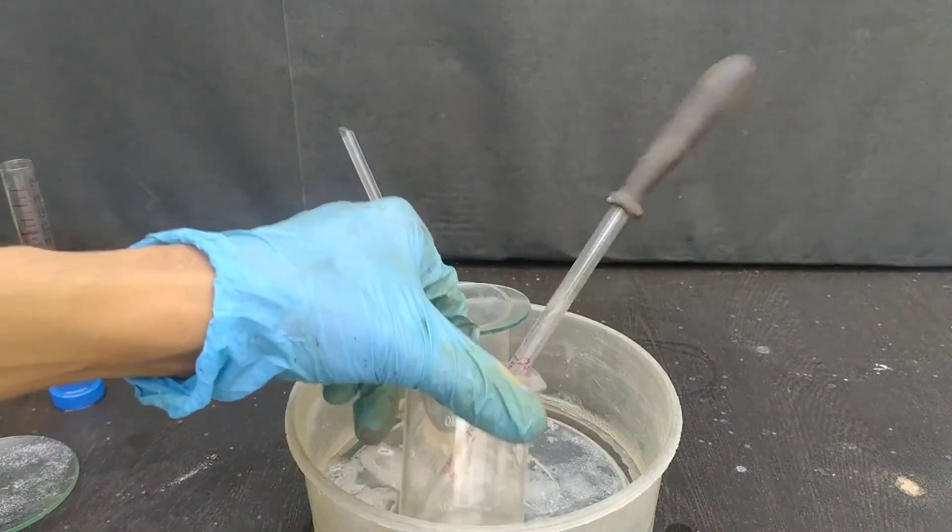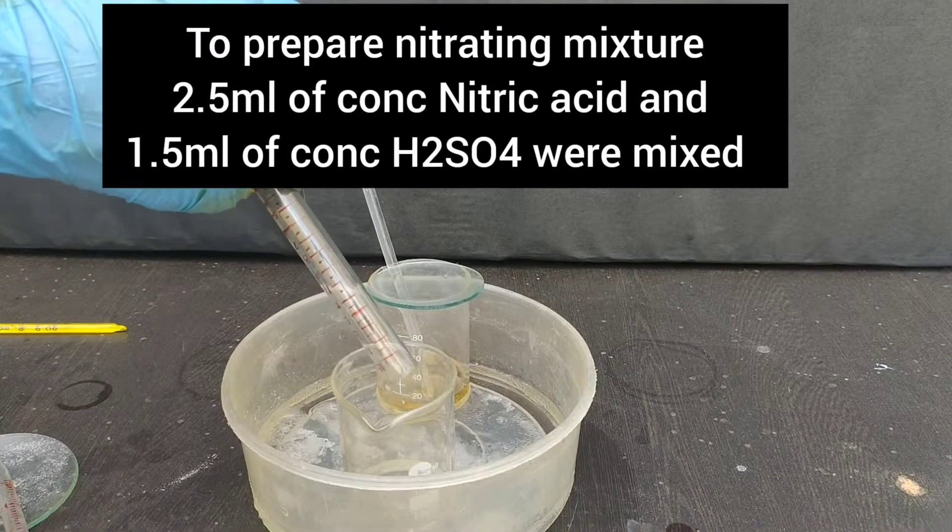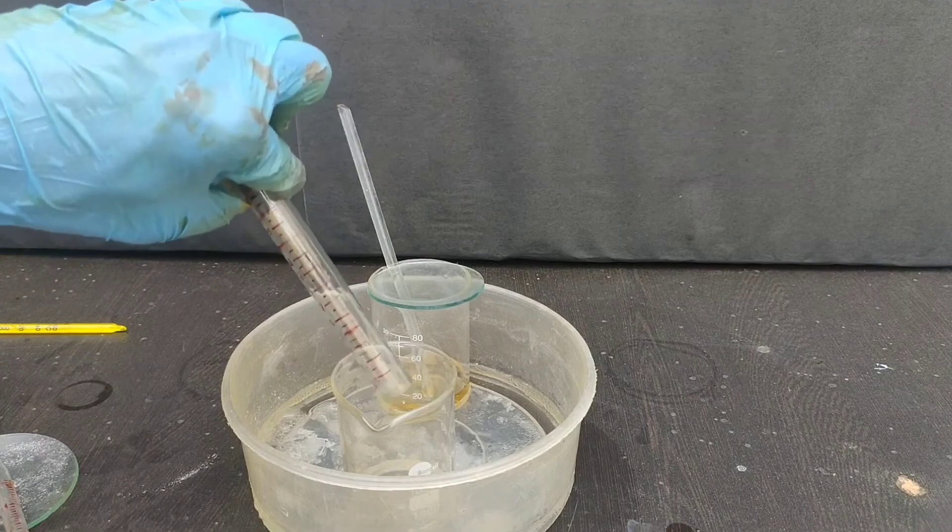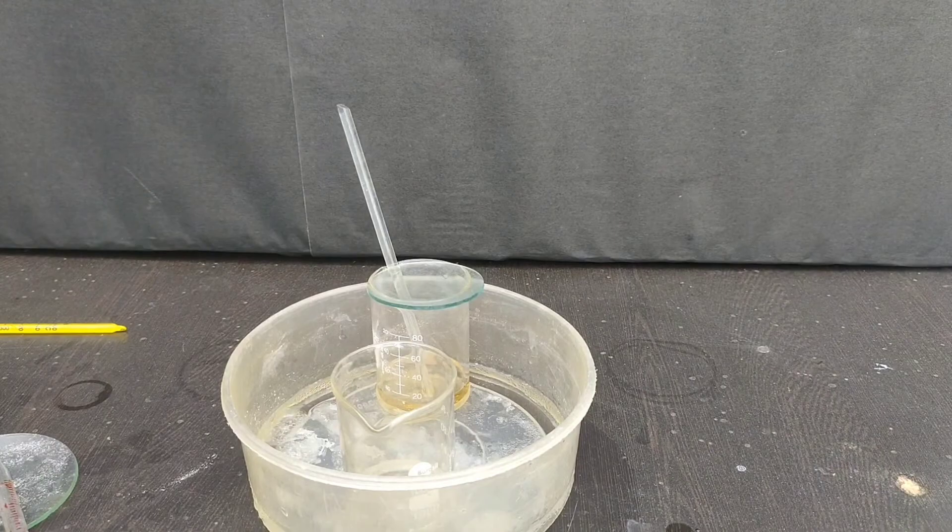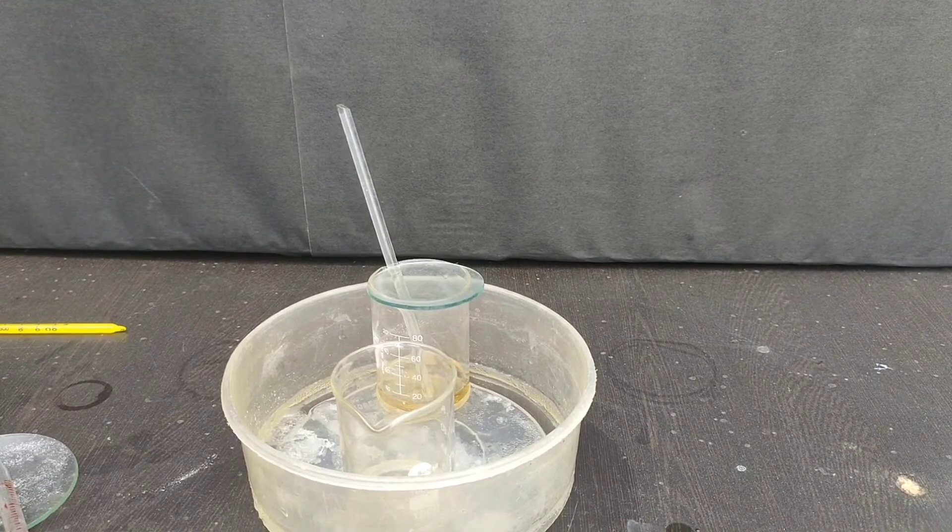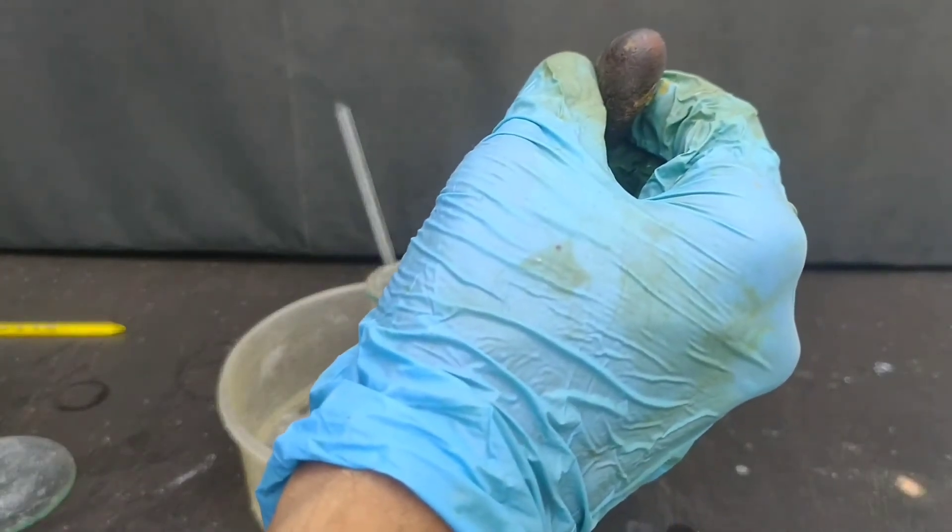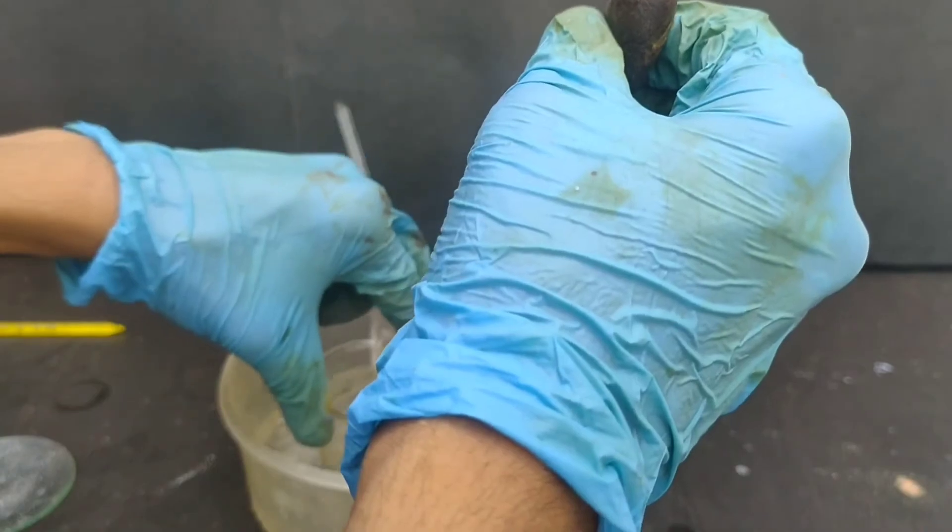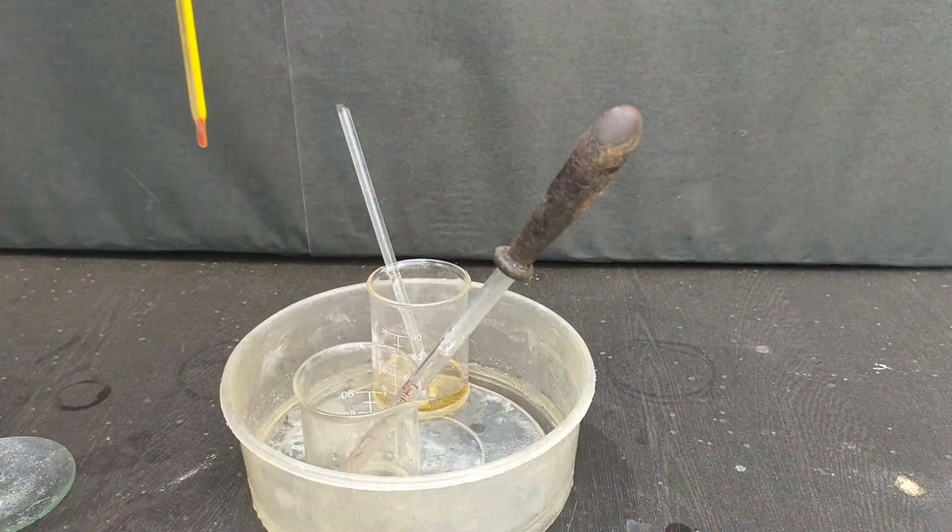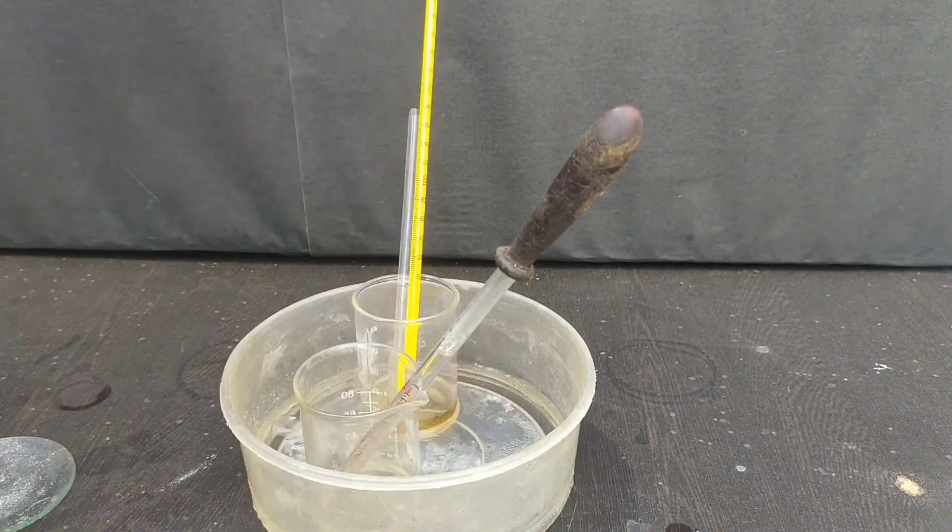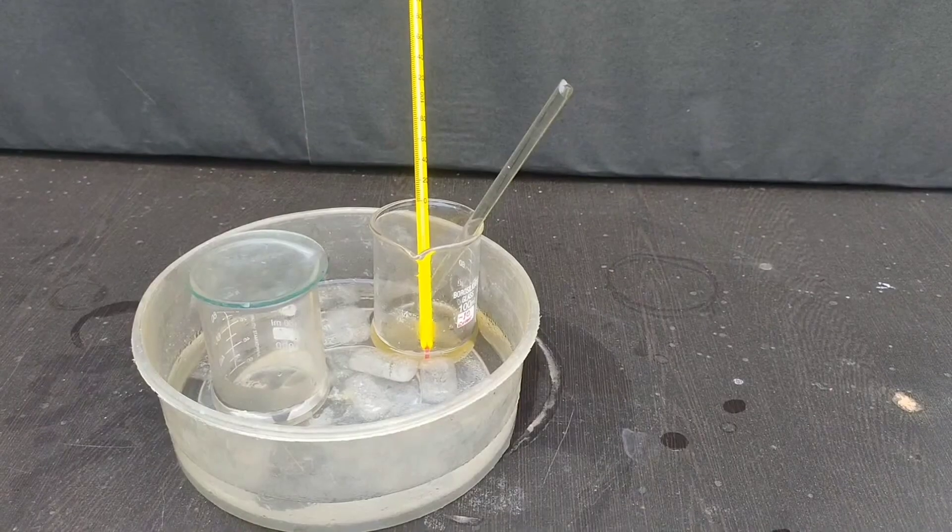First we take the beaker in an ice bath. 2.5 ml of concentrated nitric acid was added in a beaker. To this, 1.5 ml of concentrated sulphuric acid will be added drop-wise. A thermometer was placed inside the beaker to monitor the temperature, and the solution was chilled to 0 degrees Celsius.